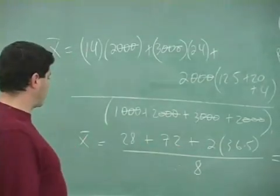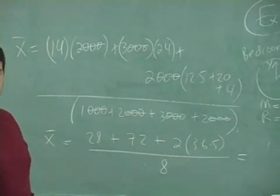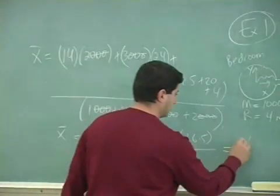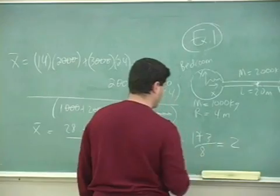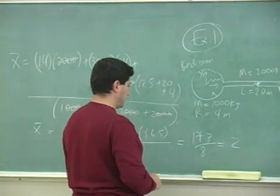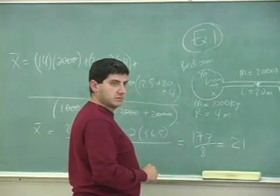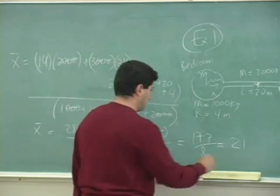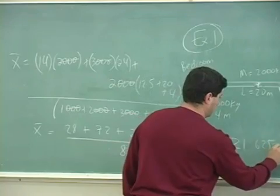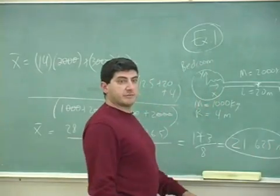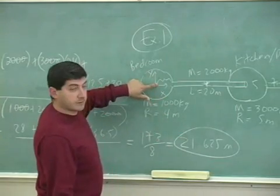So this is equal to 100 plus 73 = 173, divided by 8, which gives approximately 21.6 meters — let's call it 21 meters from my coordinate origin. So the center of mass, I can now pinpoint it: it's about 21 meters from the left edge.